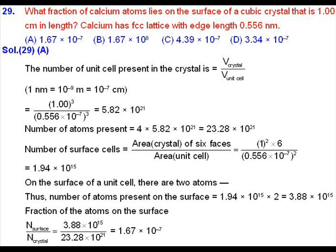We are going to discuss question number 29 from MTP4. We have to find the fraction of calcium atoms which lie on the surface of a crystal. The length of the crystal is 1 cm, and it is given that calcium forms an FCC lattice having a lattice parameter of 0.556 nm.